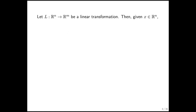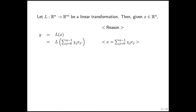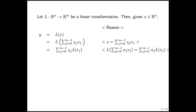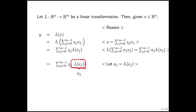Let's say that L is a linear transformation, and we're given some vector x. Let's call y the result of applying L to the vector x. We know that x can be written as the linear combination of the unit basis vectors. We've also learned that you can either take the linear combination first and then transform, or transform each of those vectors first and then take the linear combination.